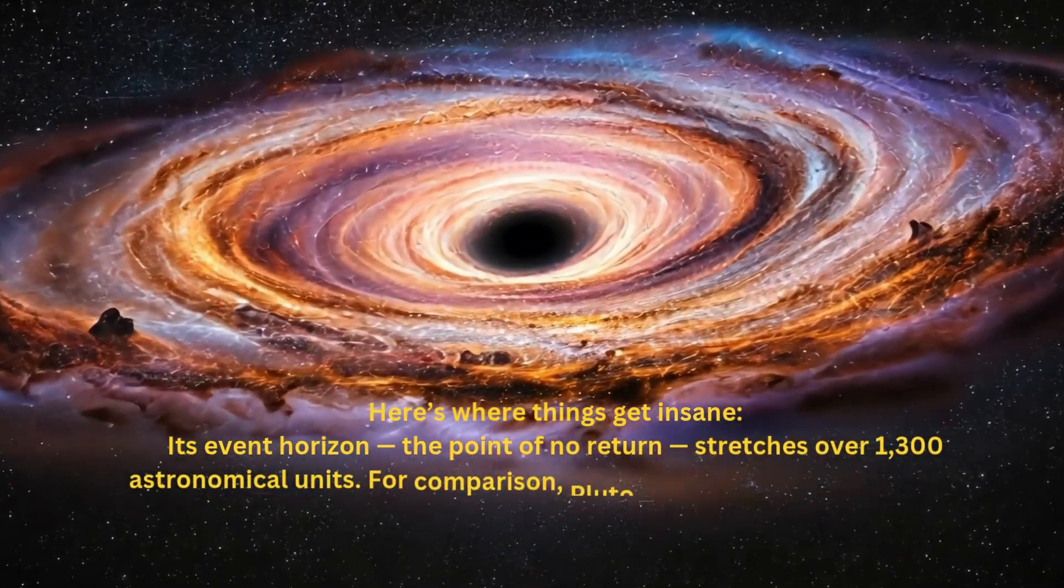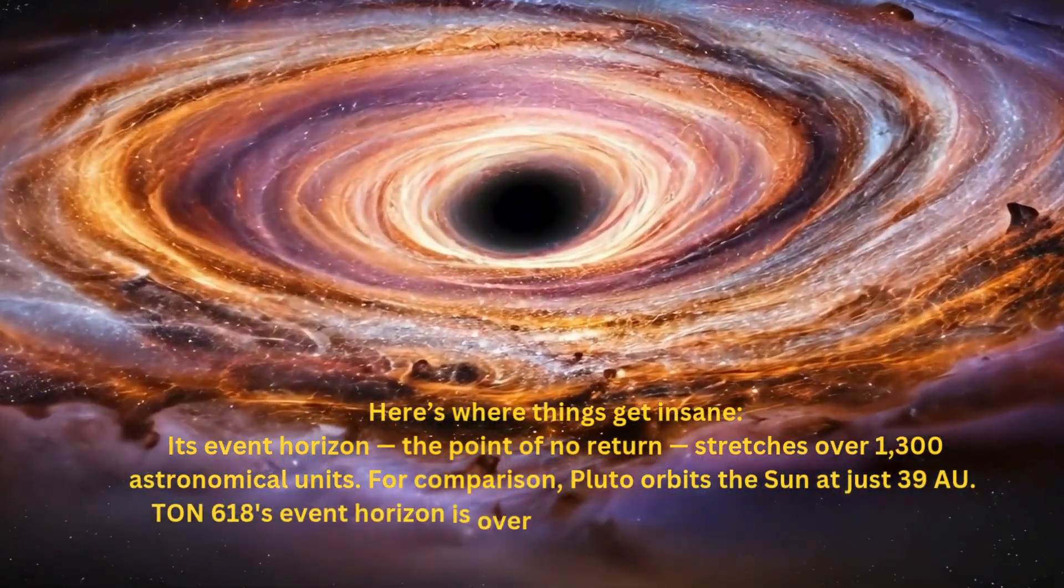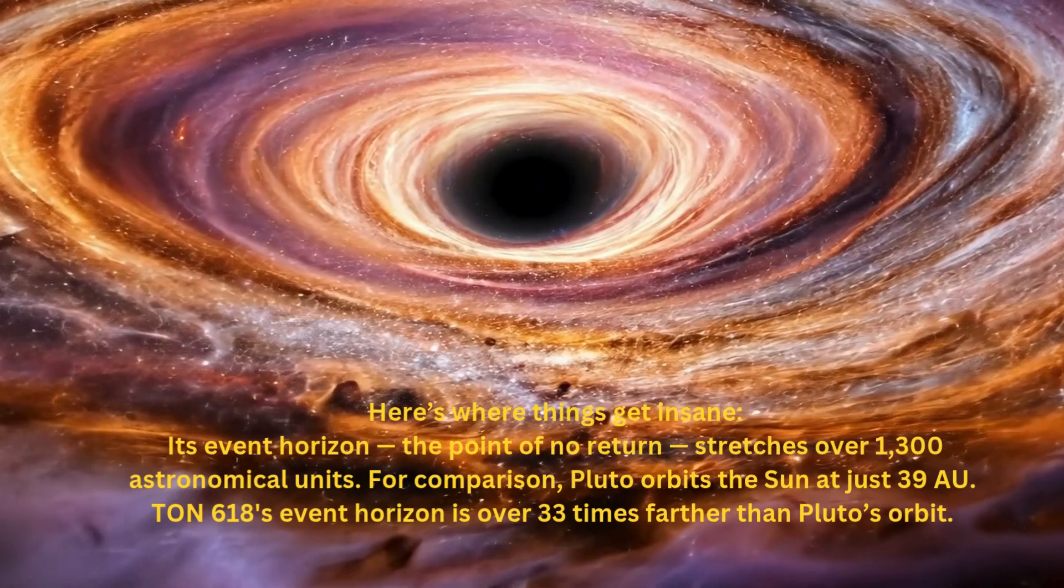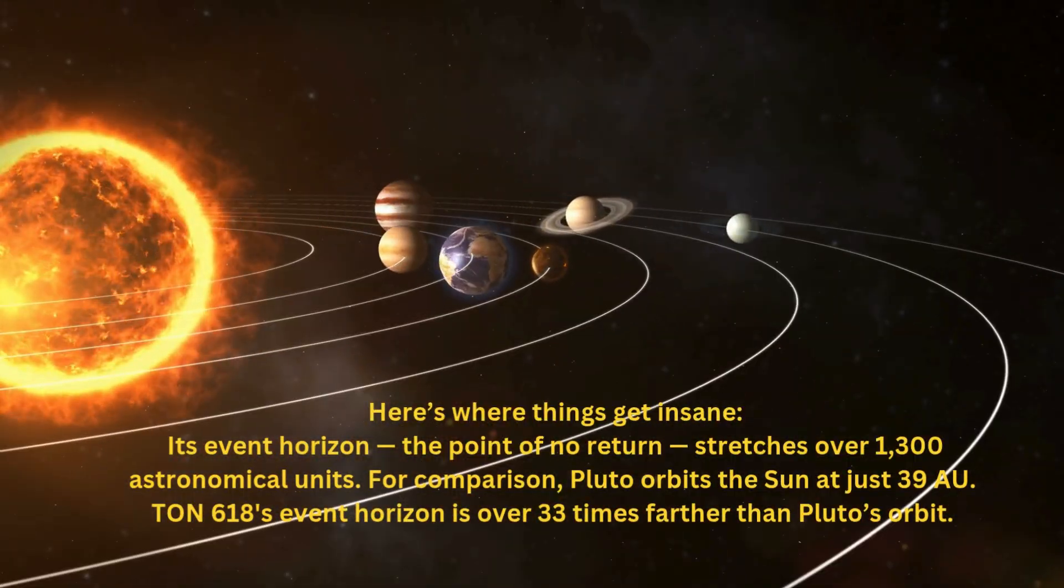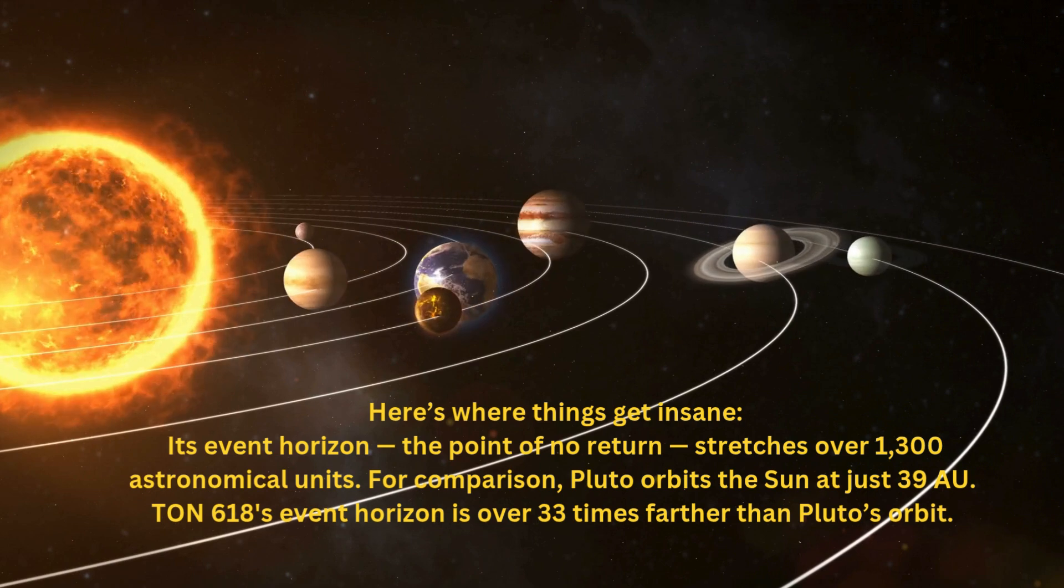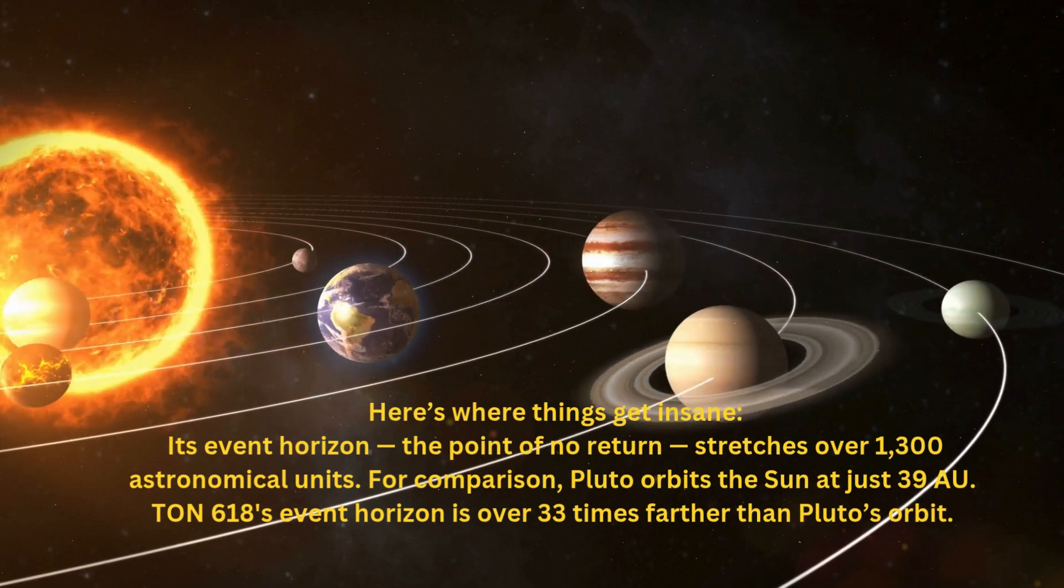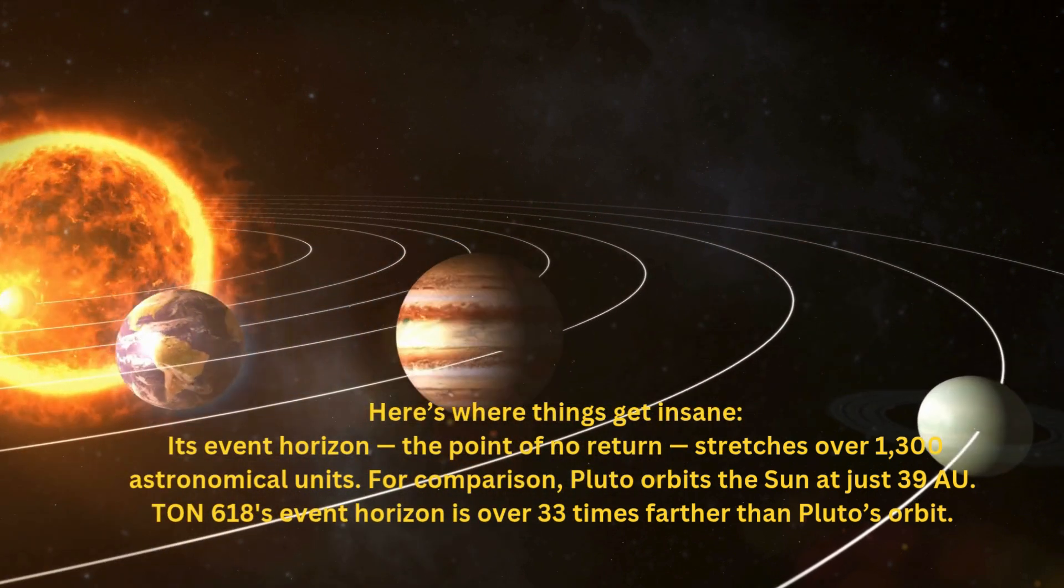Its event horizon, the point of no return, stretches over 1,300 astronomical units. For comparison, Pluto orbits the sun at just 39 AU. TON 618's event horizon is over 33 times farther than Pluto's orbit.